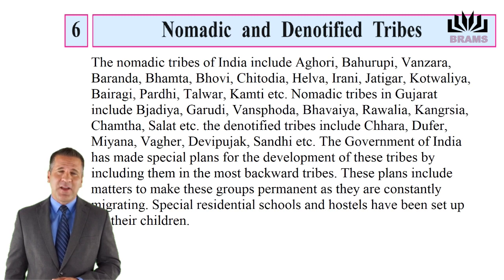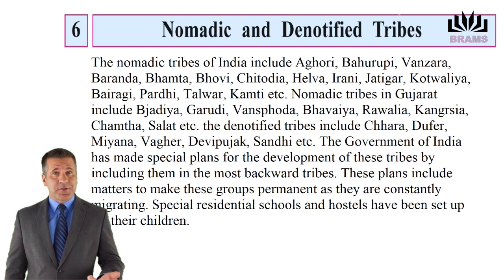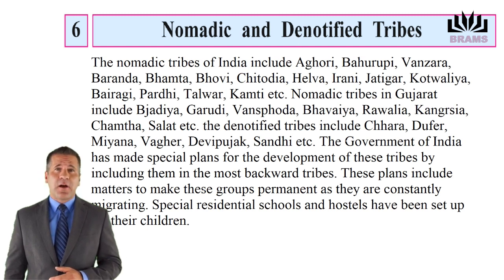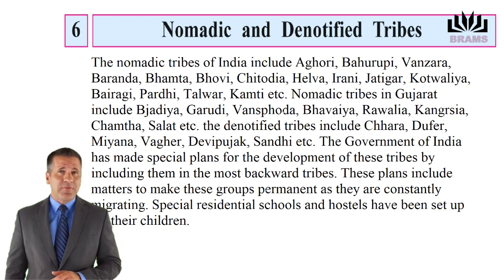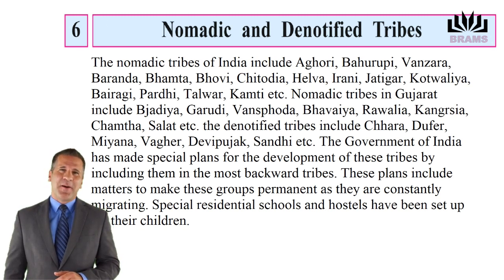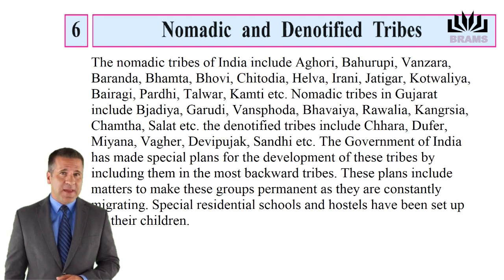The denotified tribes include Chhara, Duffa, Miana, Vagha, Devi Pujak, Sandhi, etc. The government of India has made special plans for the development of these tribes by including them in the most backward tribes. These plans include matters to make these groups permanent as they are constantly migrating. Special residential schools and hostels have been set up for their children.